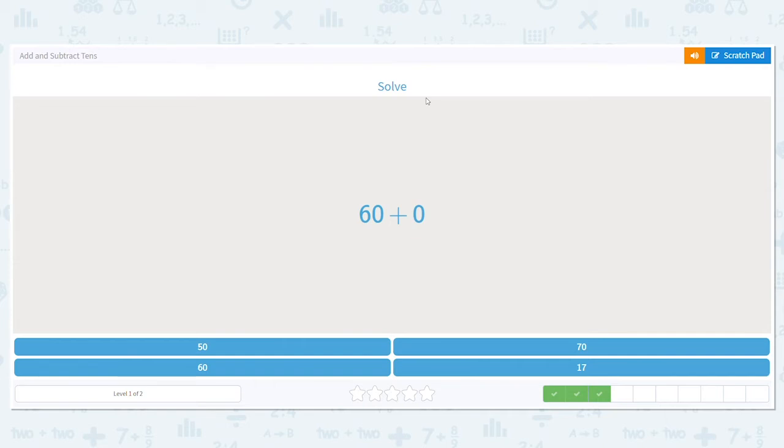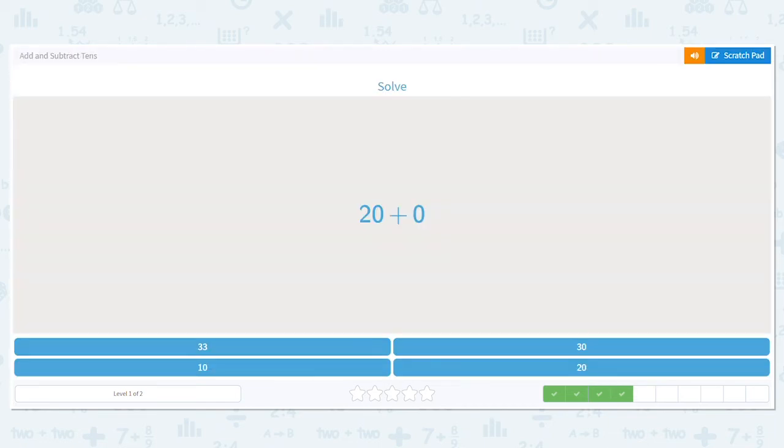How about 60 plus 0? Any number plus 0 equals that other number. So what's the other number here besides 0? 60. Good job. 20 plus 0. What would that equal? Any number plus 0 equals that number. 20. Good job.